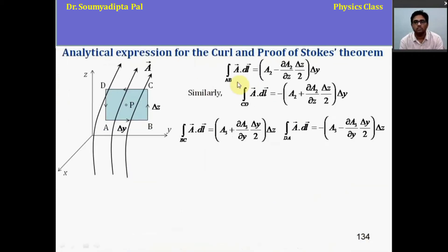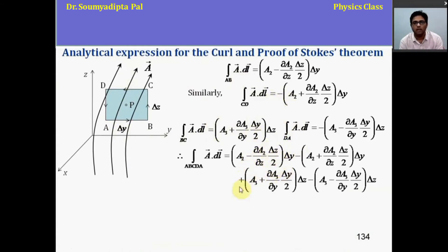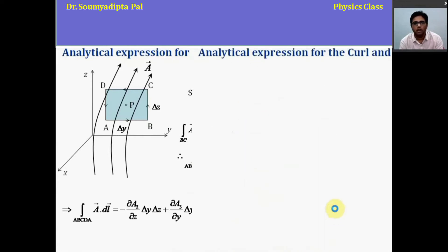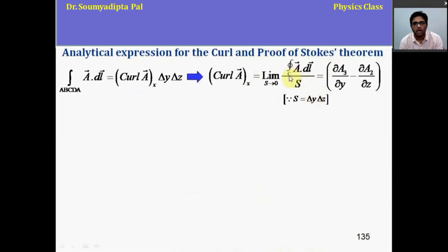Similarly, along CD, BC and DA, the value of integrations are like this. So total closed line integration along A, B, C, D, A path will be addition of all the 4 terms and we get this, del A3 del y minus del A2 del z multiplied by del y del z. And this term is actually the x component of curl of A. Then this x component of curl of A can be written like this. And condition is the limit s tends to 0. It means this expression is valid only in the limit as the rectangle shrinks to p point.